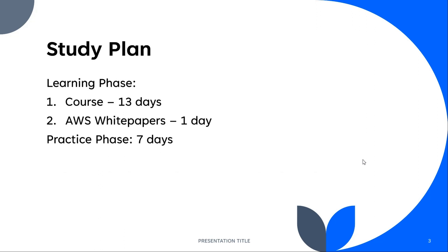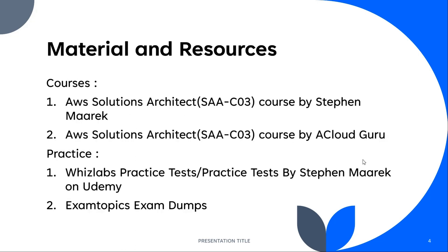For the study plan, I followed a basic approach: I took a course and studied for 13 days, which is quite enough. Even if the course is around 30 hours, you can easily contribute one to two hours a day. Another technique to complete it faster is to watch videos at 1.5x or 2x speed. Then I went through important AWS white papers — just skimming through them in a single day — and then I practiced questions for seven days, because that is very, very important.